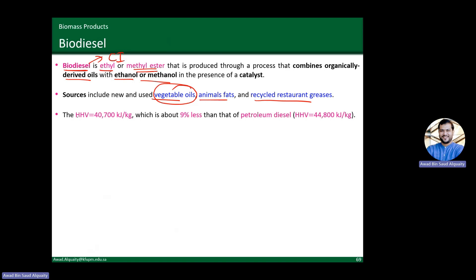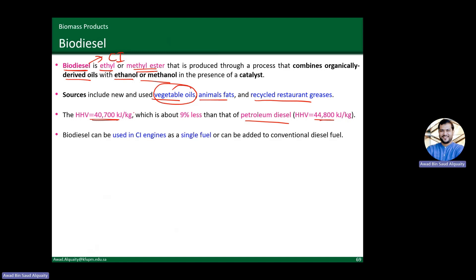The heating value for biodiesel is much better than ethanol. The high heating value is about 40,700 kJ/kg, which compares favorably with fossil diesel at 44,800 kJ/kg — only about 10% less, not bad at all. Biodiesel can be used in compression ignition engines as a single fuel or as a blend mixed with conventional diesel fuel.